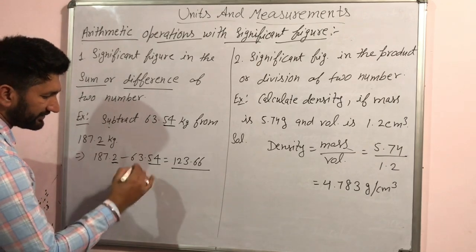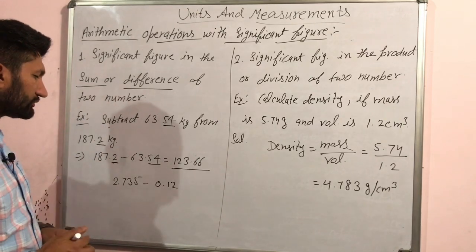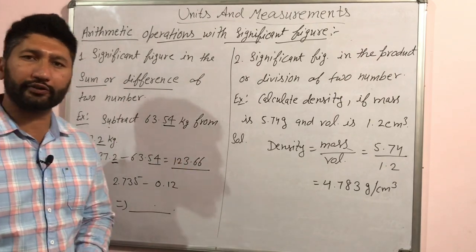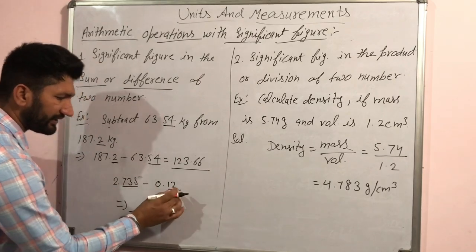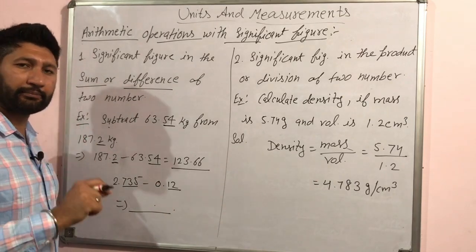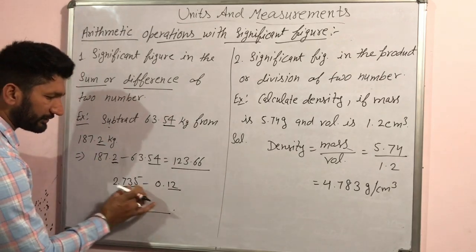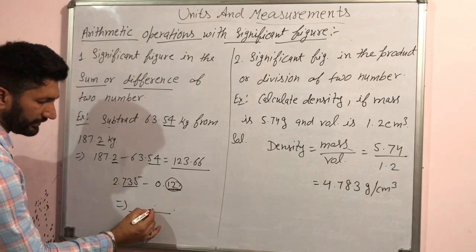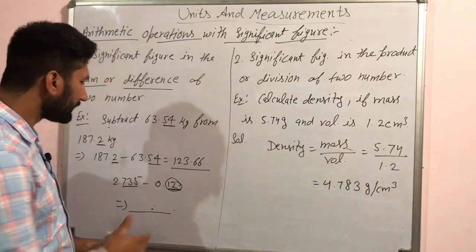You can see the result — look at the decimal number, the digits after the decimal. Compare the number of decimal places across terms. The minimum number of decimal places determines how you round off the result. So in this case, two digits after the decimal — round off to two decimal places.